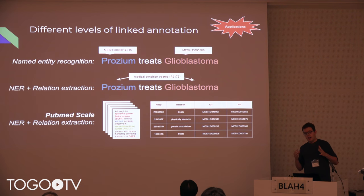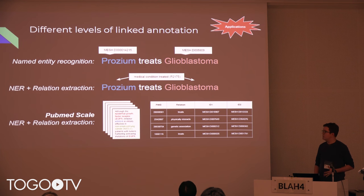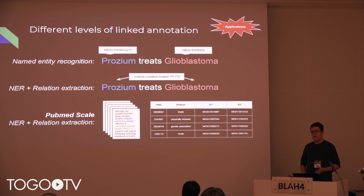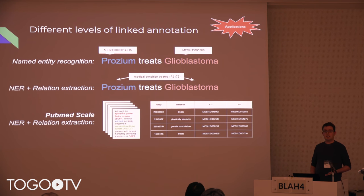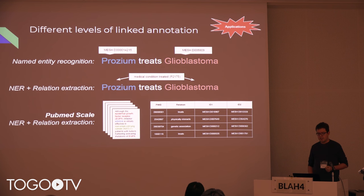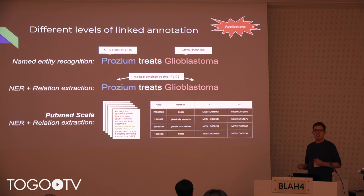This is where I think we can use some of the linked annotation data that we've already got. The named entity recognition systems, particularly PubTator, give us a large-scale amount of genes, diseases, and drugs annotated across the text. Our lab has been particularly interested in relation extraction systems for actually trying to identify the relation between entities, and I'm particularly interested in doing that at PubMed scale — when you have millions of documents and a certain amount of redundancy where you're able to capture things.